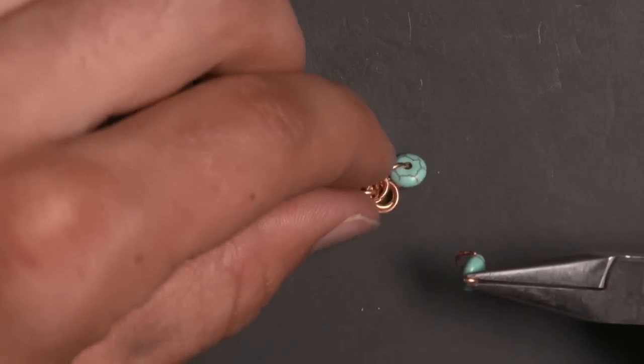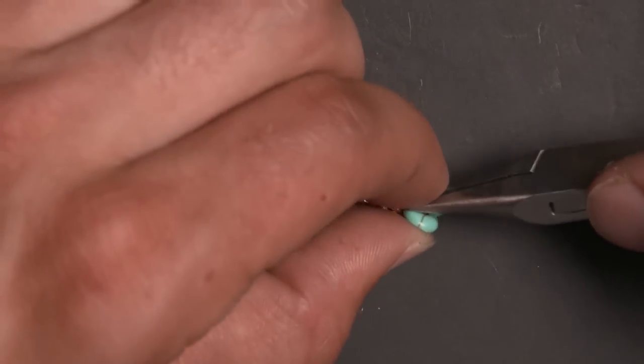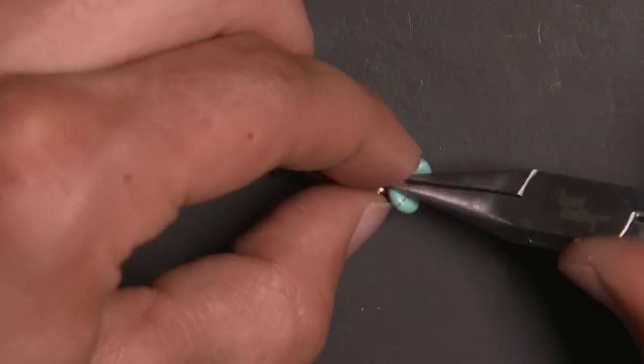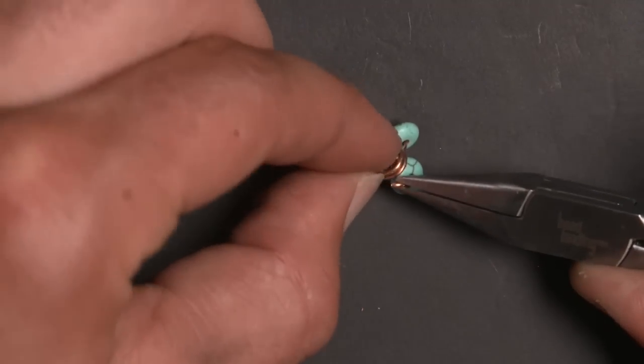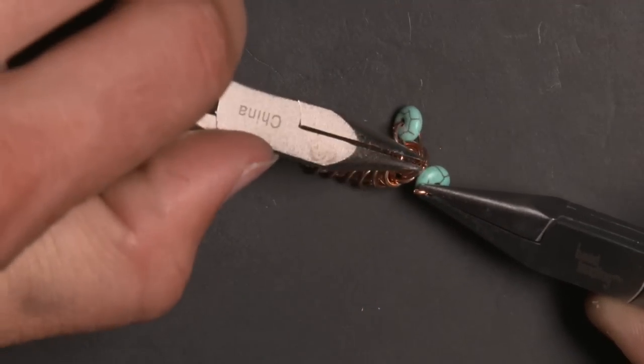Now we're going to add another turquoise bead to a ring and we're going to basically do the same thing but the opposite side this time. So the second last large ring that you captured in the last step, you're going to capture the second last large ring on the opposite side of the box chain.